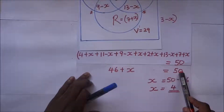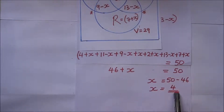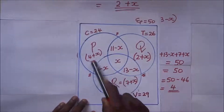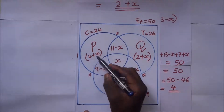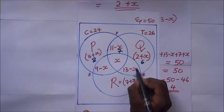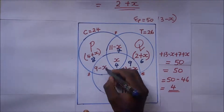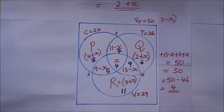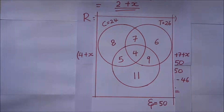Solving 46 + x = 50 gives x = 4. Now we fill in the Venn diagram: chess only = 4 + 4 = 8; chess-and-tennis only = 11 − 4 = 7; tennis only = 2 + 4 = 6; tennis-and-volleyball only = 13 − 4 = 9; all three = x = 4; volleyball only = 7 + 4 = 11; chess-and-volleyball only = 9 − 4 = 5. This is our completed Venn diagram.